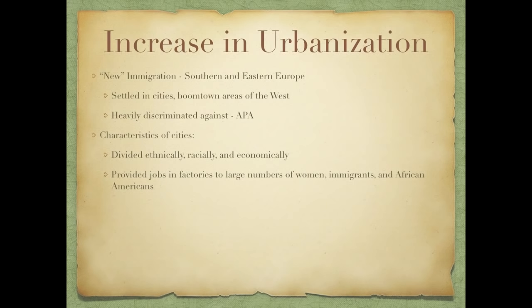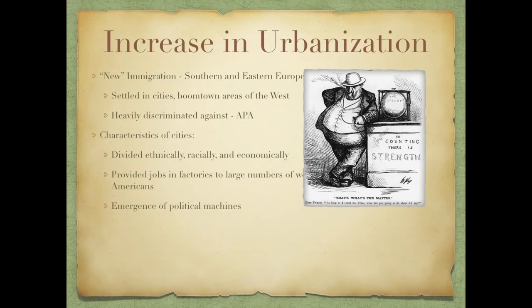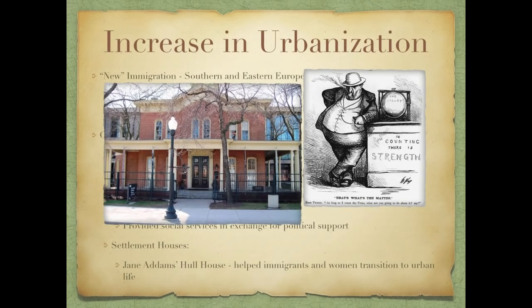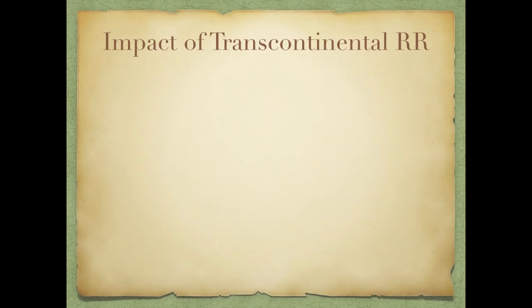Cities provided jobs and factories to large numbers of women, immigrants, and African Americans — who began moving from the South to the North. We see the emergence of political machines, most notably Tammany Hall in New York City and Boss Tweed, who provided social services in exchange for political support. Settlement houses were also founded, most notably Jane Addams' Hull House, which helped immigrants and women transition to urban life.